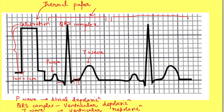You may ask where atrial repolarization is recorded. Atrial repolarization occurs at the same time as ventricular depolarization, so the voltage change there is merged with the QRS complex.